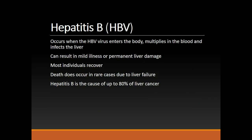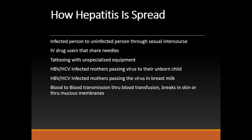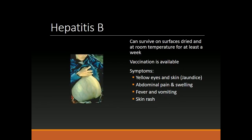Hepatitis B (HBV) occurs when the HBV virus enters the body, multiplies in the blood, and infects the liver. It can result in mild illness or permanent liver damage. Most individuals recover; death occurs in rare cases due to liver failure. Hepatitis B is the cause of up to 80% of liver cancer. How Hepatitis is spread: infected person to uninfected person through sexual intercourse; IV drug use with shared needles; tattooing with unsterilized equipment; HBV/HCV-infected mothers passing the virus to their unborn child or through breast milk; and blood-to-blood transmission through blood transfusion, breaks in skin, or through mucous membranes. Hepatitis B can survive on dried surfaces at room temperature for at least a week. Vaccination is available.